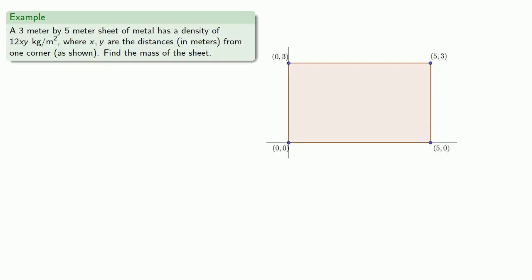So that's for the discrete case. What about the continuous case? For that, we're going to need a definite integral. Let's take a 3 by 5 meter sheet of metal, and let's assume our density is 12xy kilograms per square meter, where x and y are the distances in meters from one corner. Let's find the mass of the sheet.